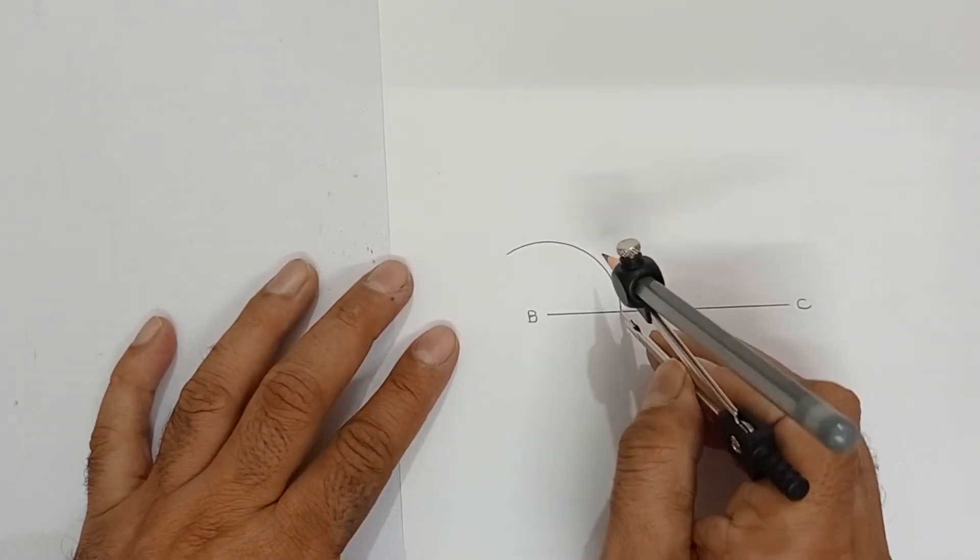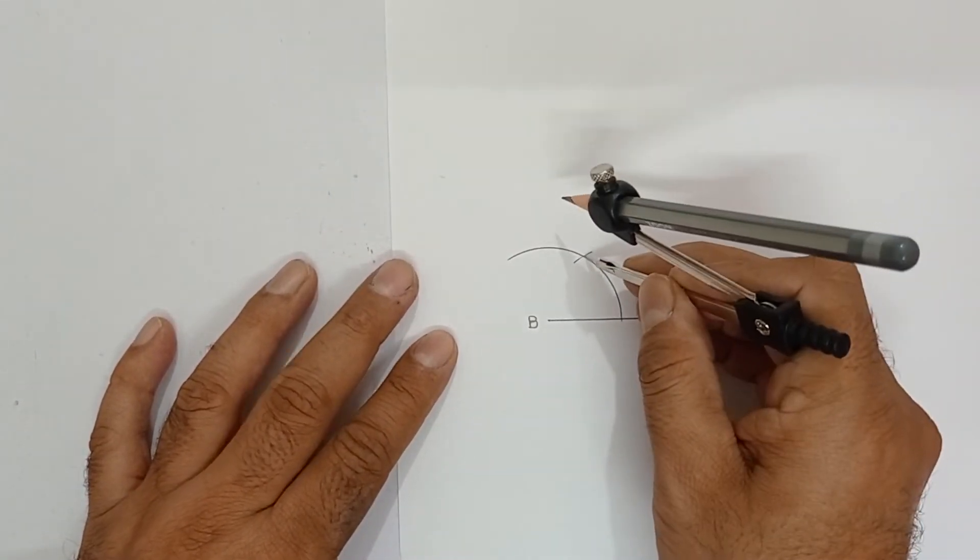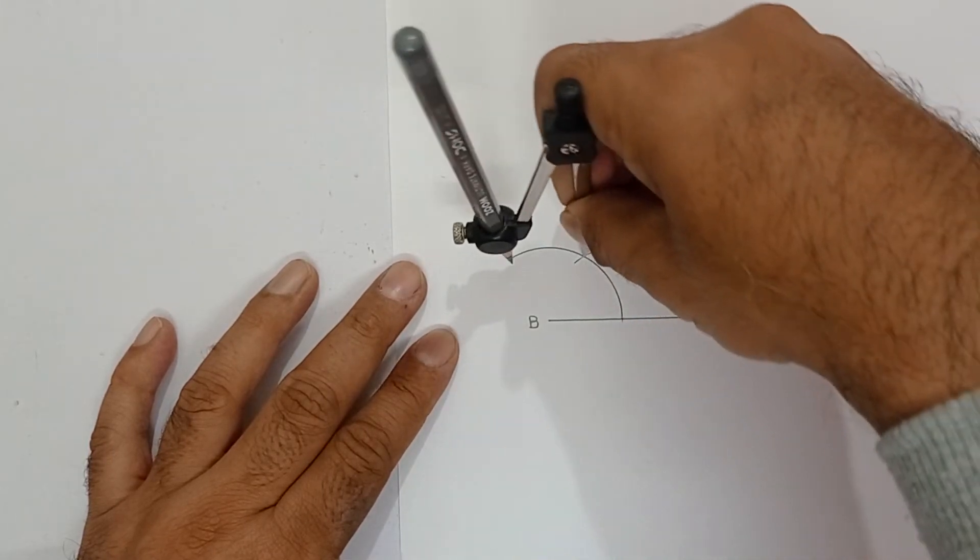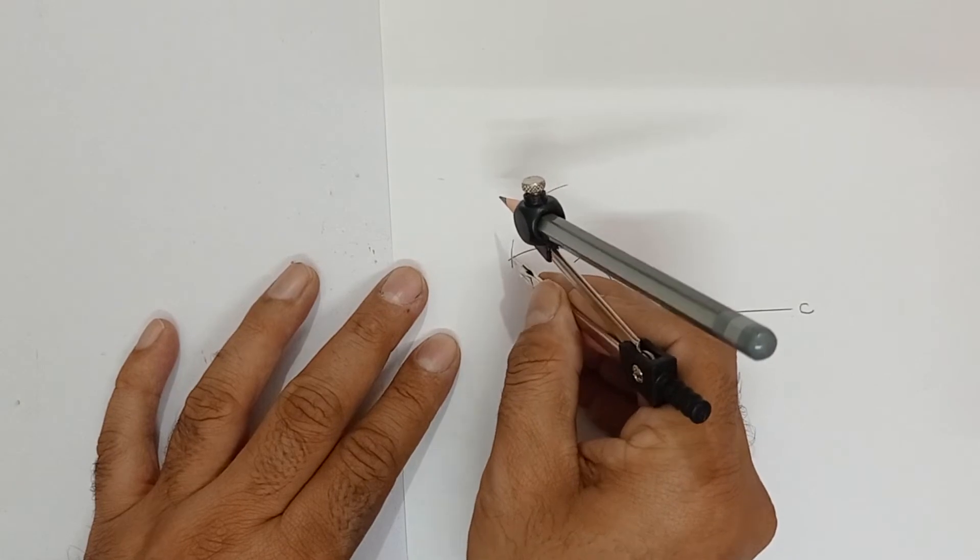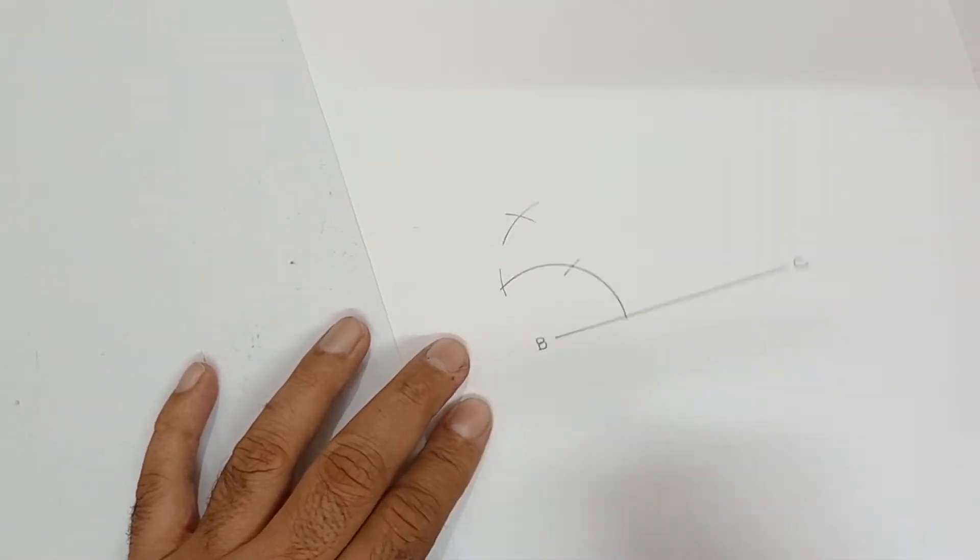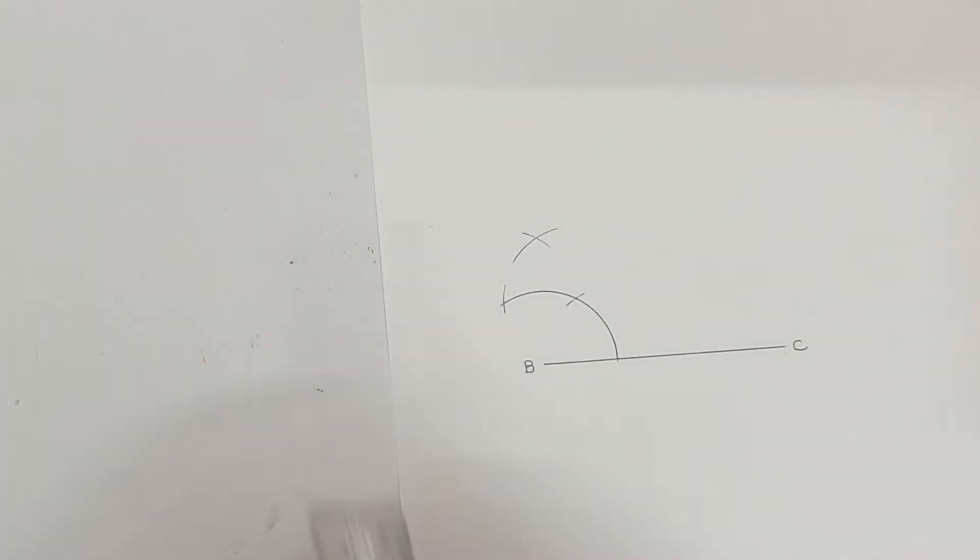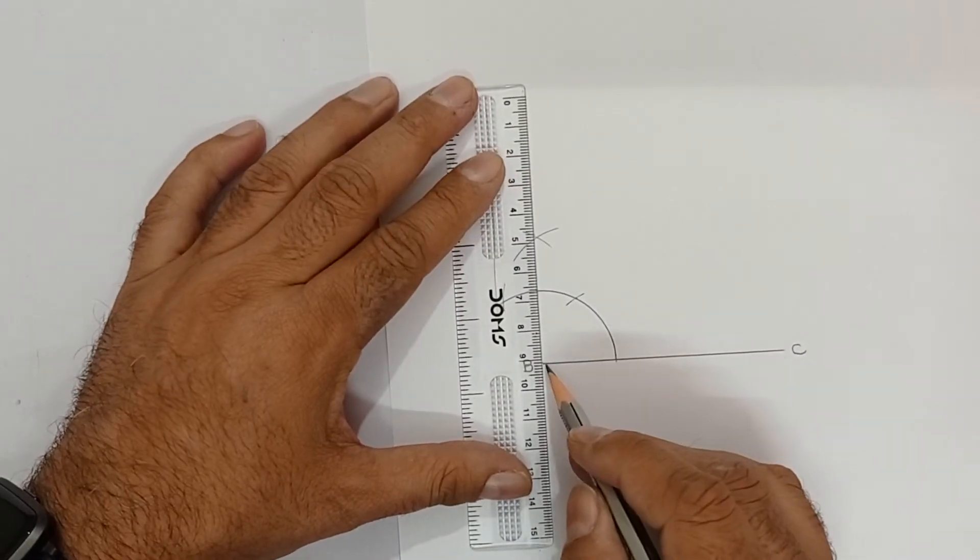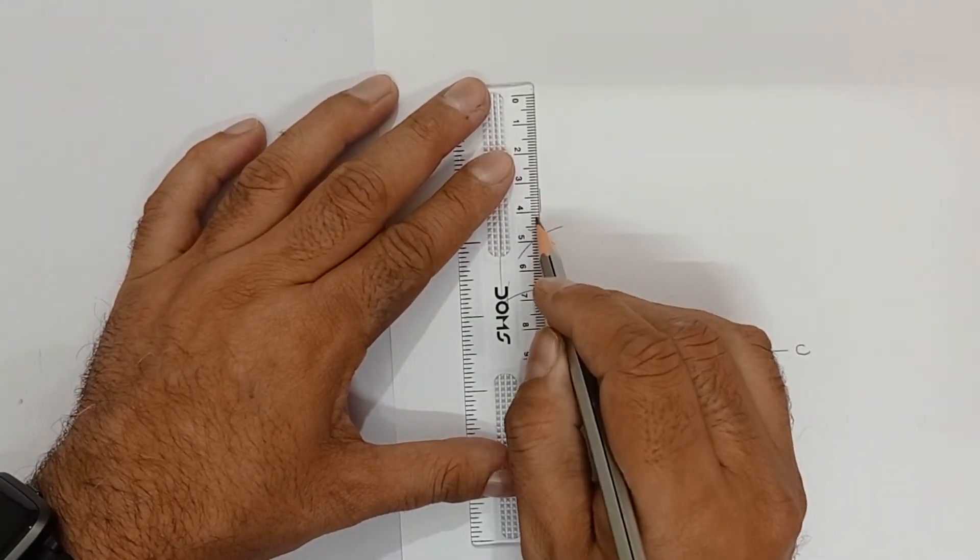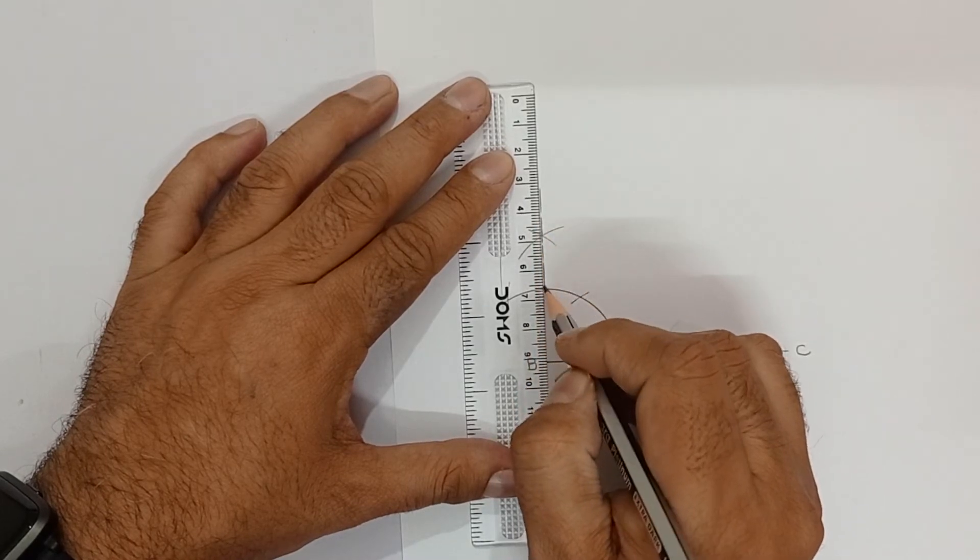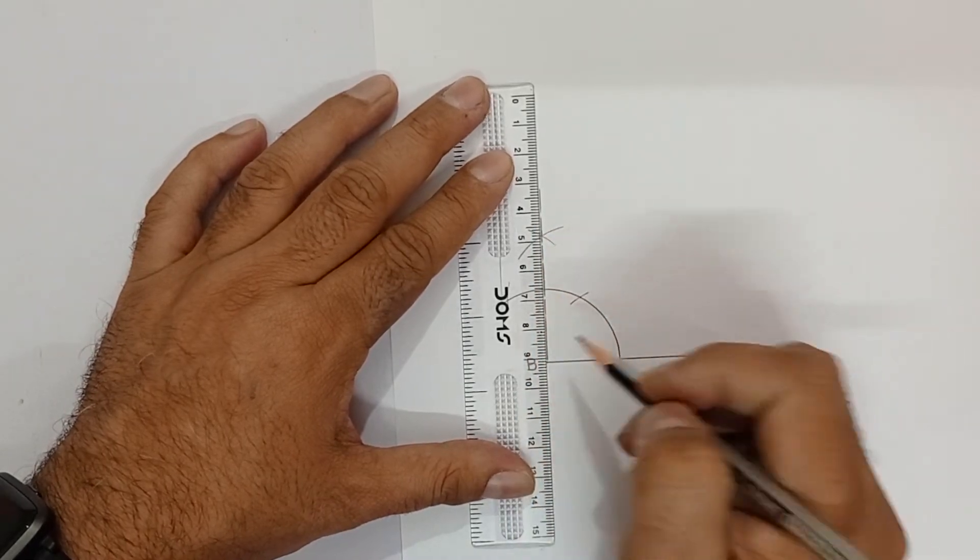Then, keep here 60 degree arc. Keep here 120 degree arc. Once at 60, once at 120. These two arcs that cut, this will be 90 degree angle. This is dotted. Because 90 degree is not your original requirement.